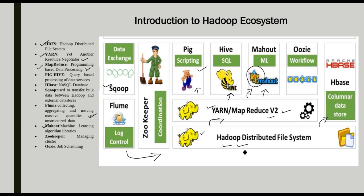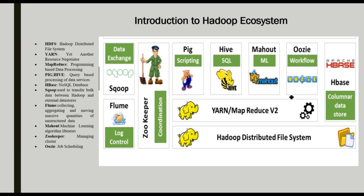Next is Zookeeper. In the Hadoop distributed file system, when we have many systems, one resource, and one cluster, we need to manage and coordinate all of them. Zookeeper manages all clusters and coordinates all components. Oozie is a job scheduler — it schedules jobs and makes services available in the Hadoop ecosystem.